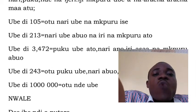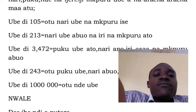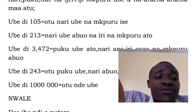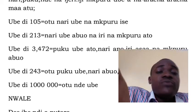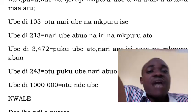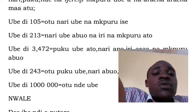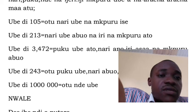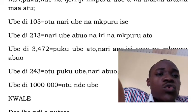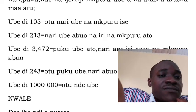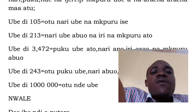In Ube di 105, the Igbo sentence is: Otu nari ube na mkoro ise. That means they have 100 pears and five pieces. Mkoro means pieces in English.